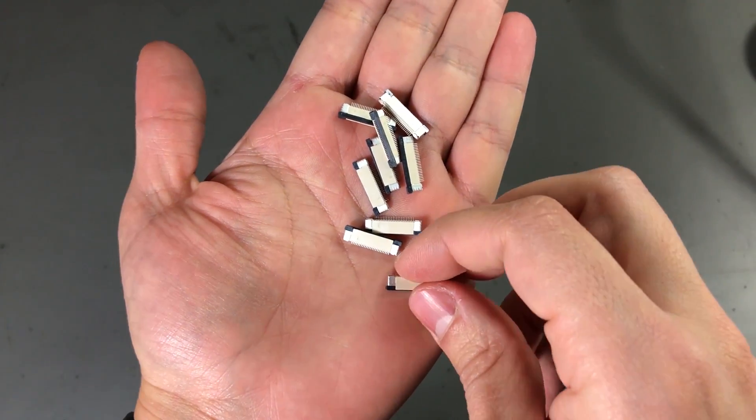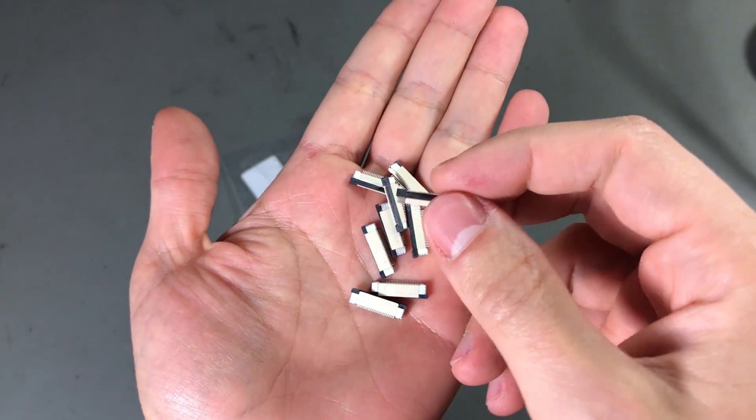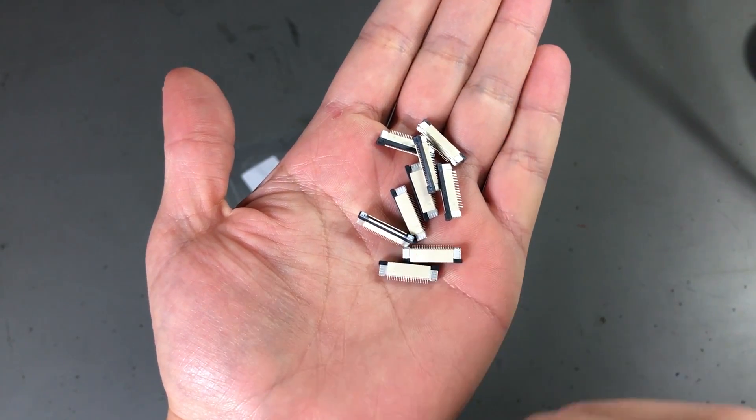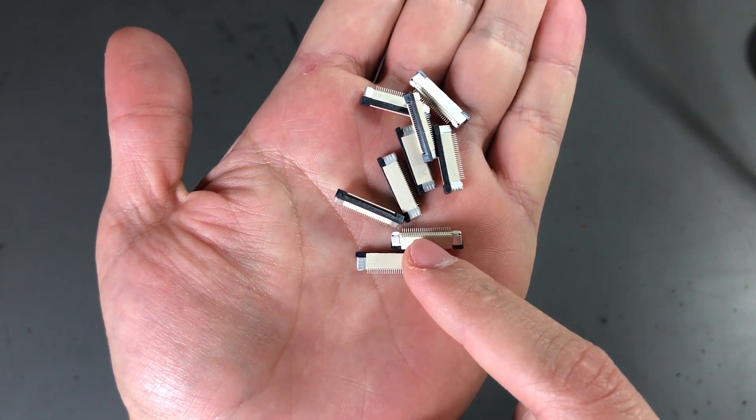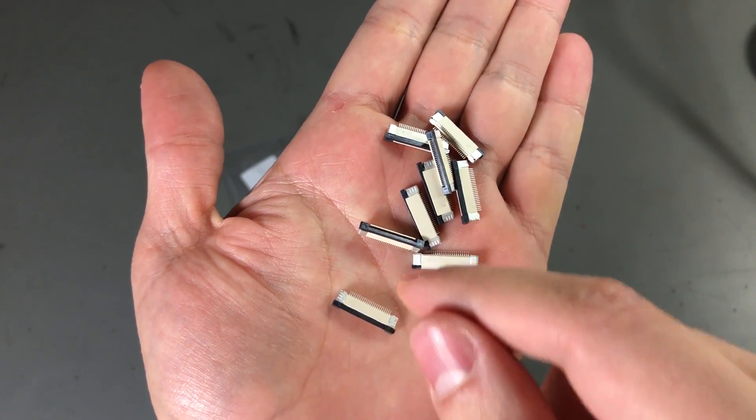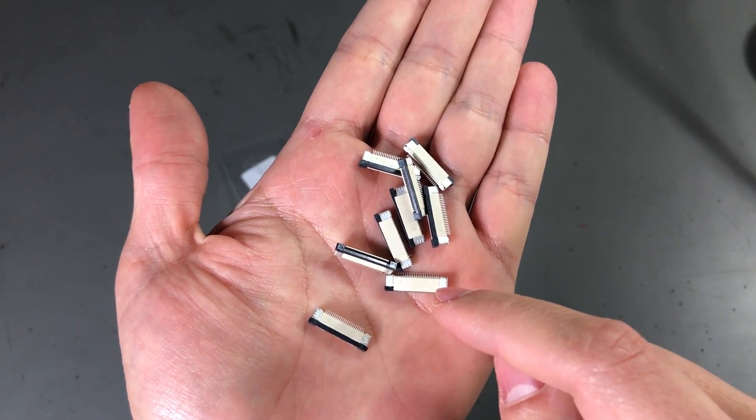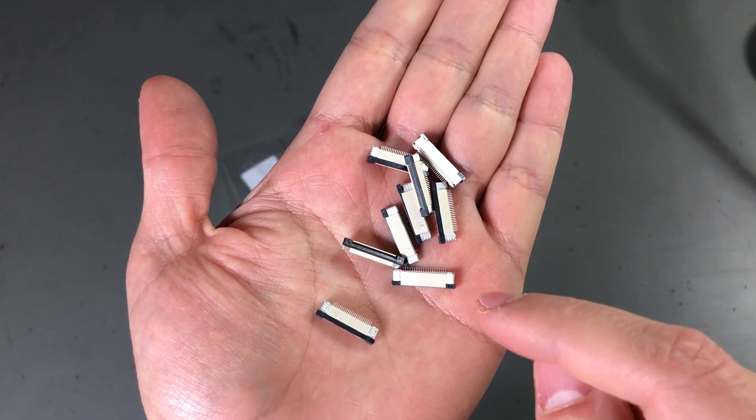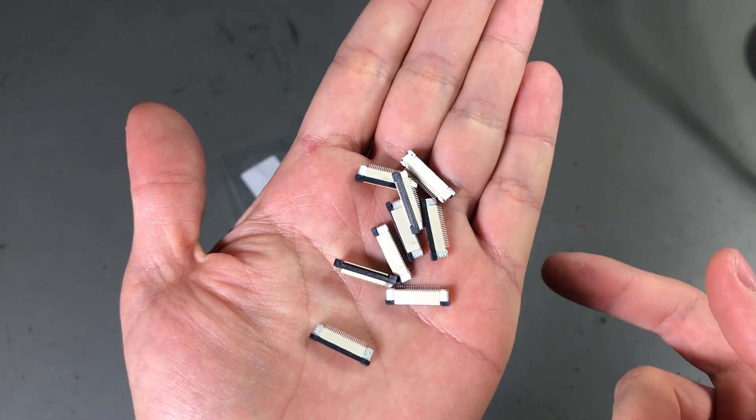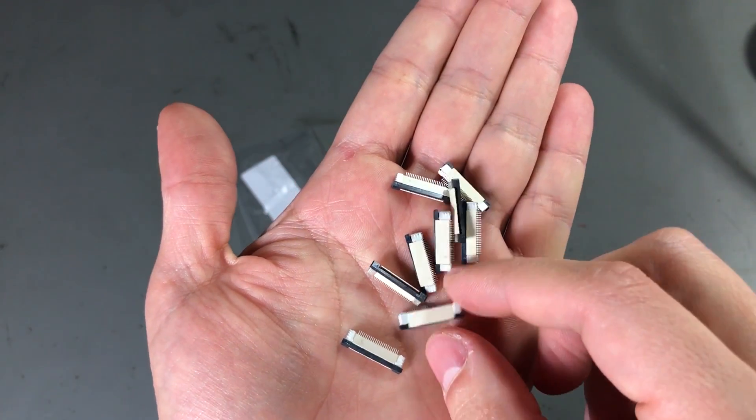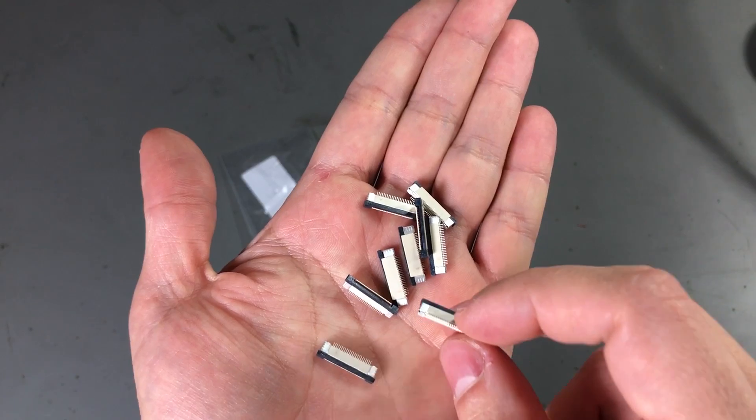And for the last item in today's video, I have this set of 24-pin flat flex connectors. These are 0.5 mm pitch. And they are top contact ones. I have shown in a previous video that a seller previously sent me a bottom contact connector even though I was ordering a top contact connector. And I couldn't use that one. But I've ordered again. And this time the seller sent the correct connector.